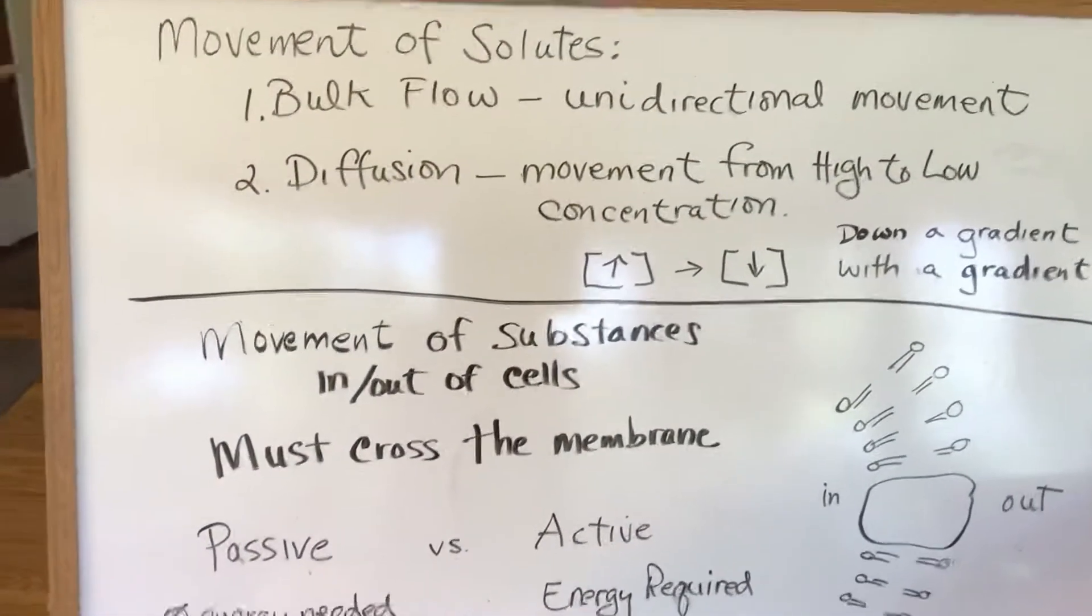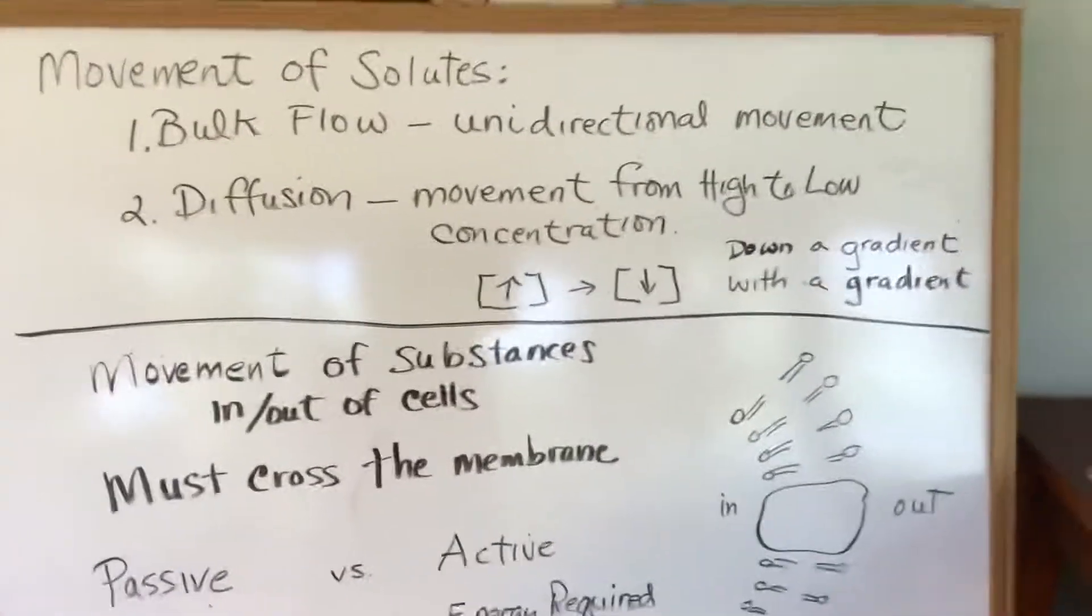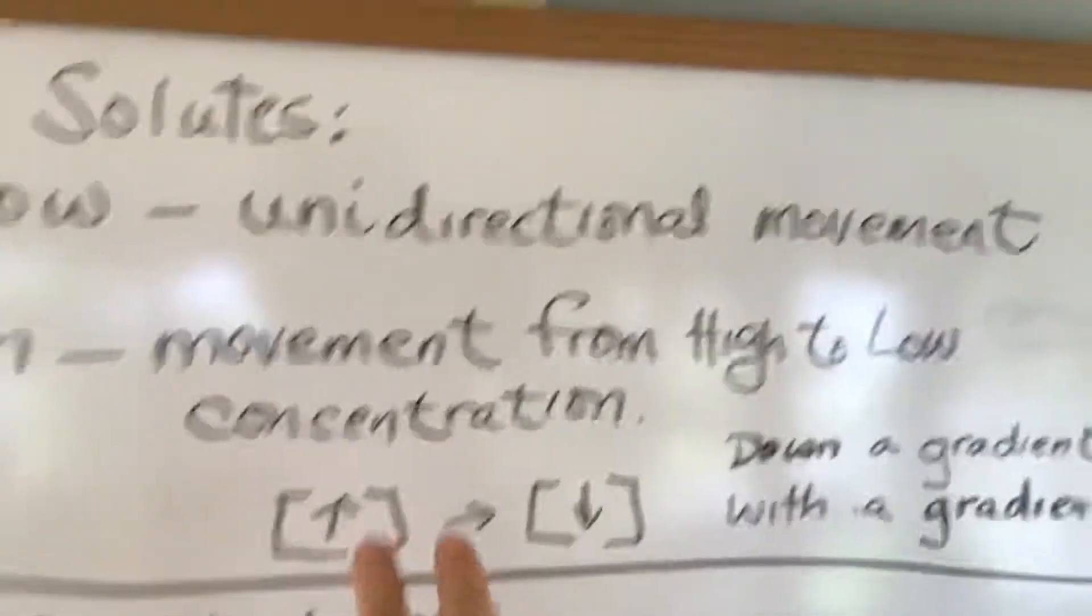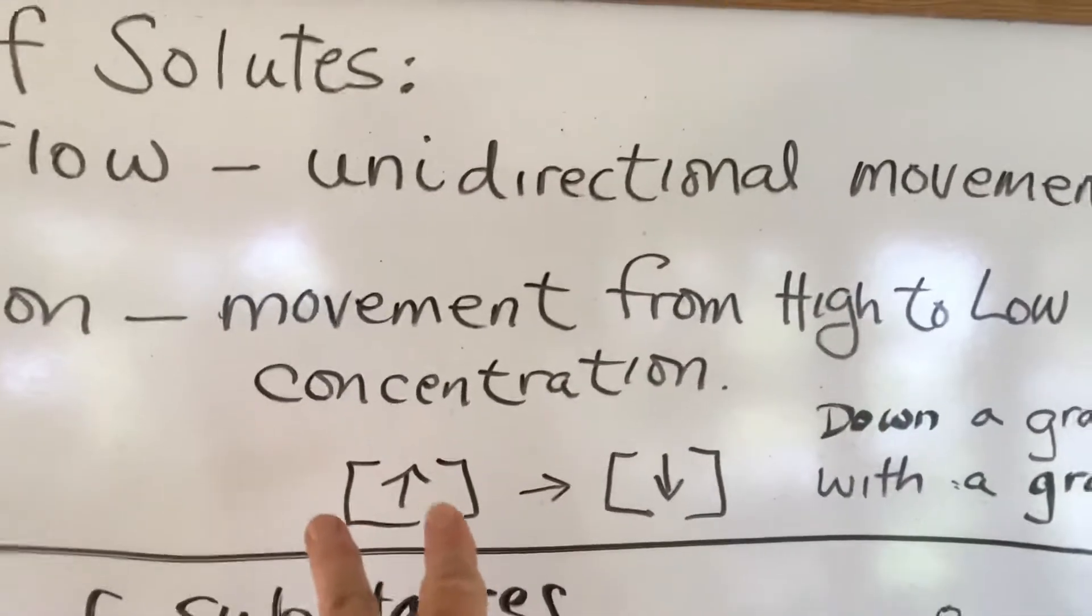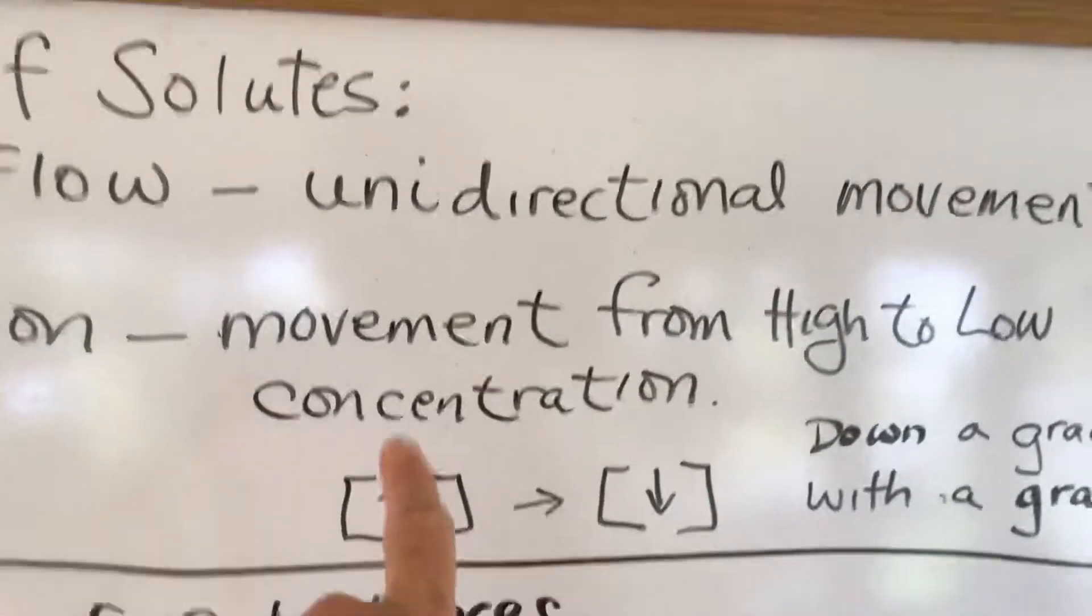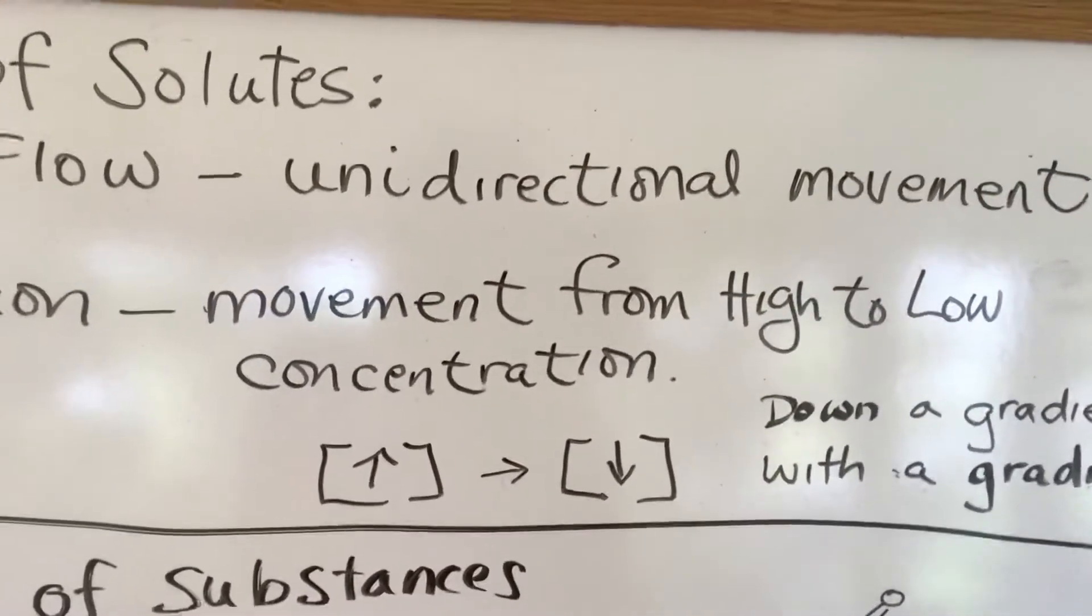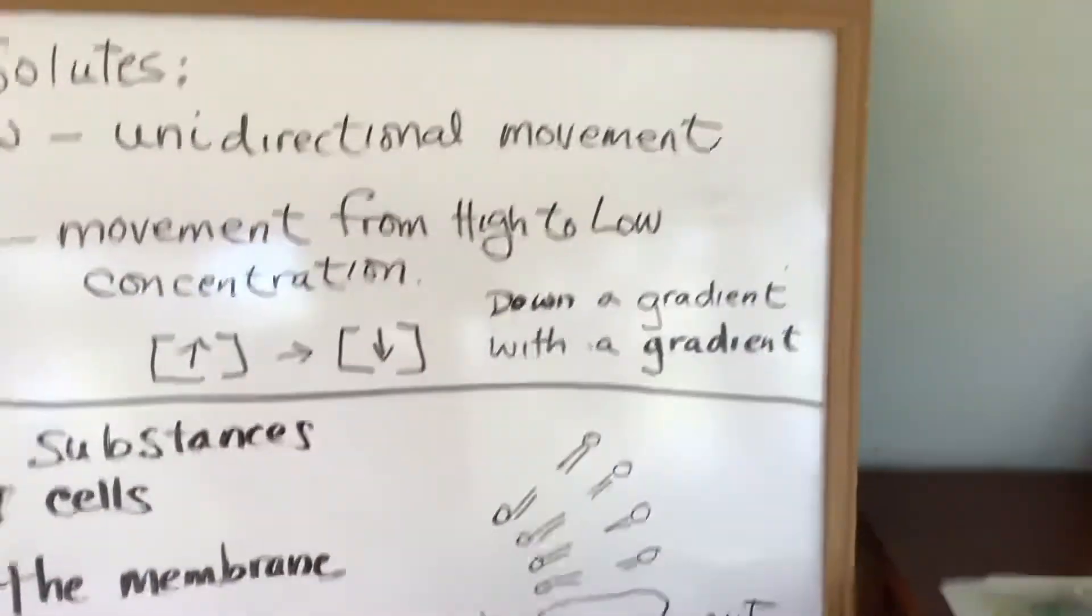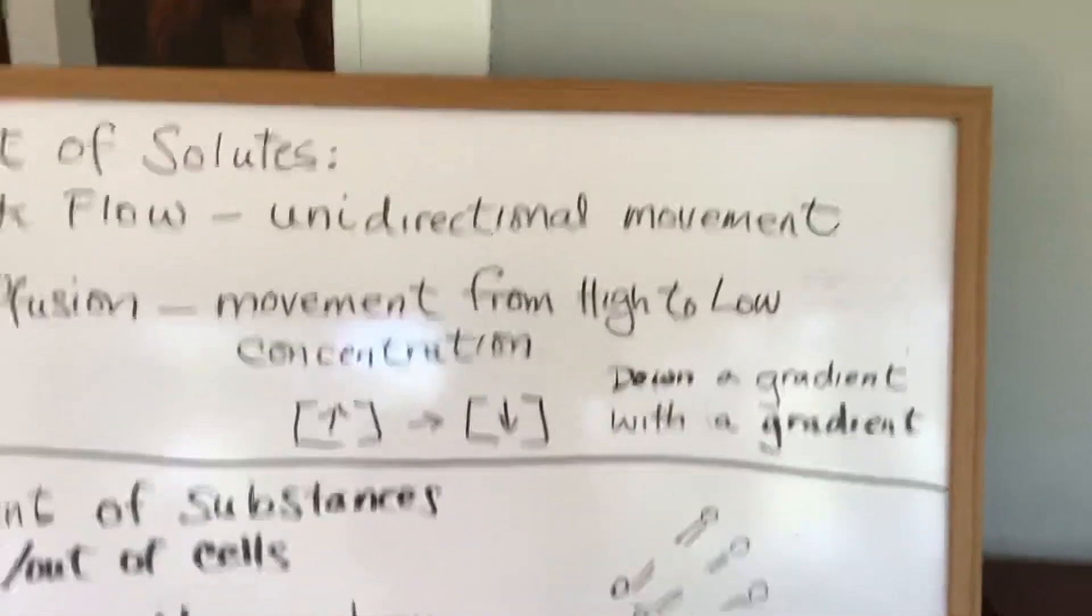Another type of movement is called diffusion. Diffusion is the movement of a substance from a high to low concentration. We use these little brackets here to indicate concentration. This will be a nice shorthand when we are going through all the different ways that things can move because I can indicate whether it's a high or low concentration or I can tell you what's in concentration by those little brackets. When something is moving from high to low concentration, we basically say it's moving either down a gradient or with a gradient.